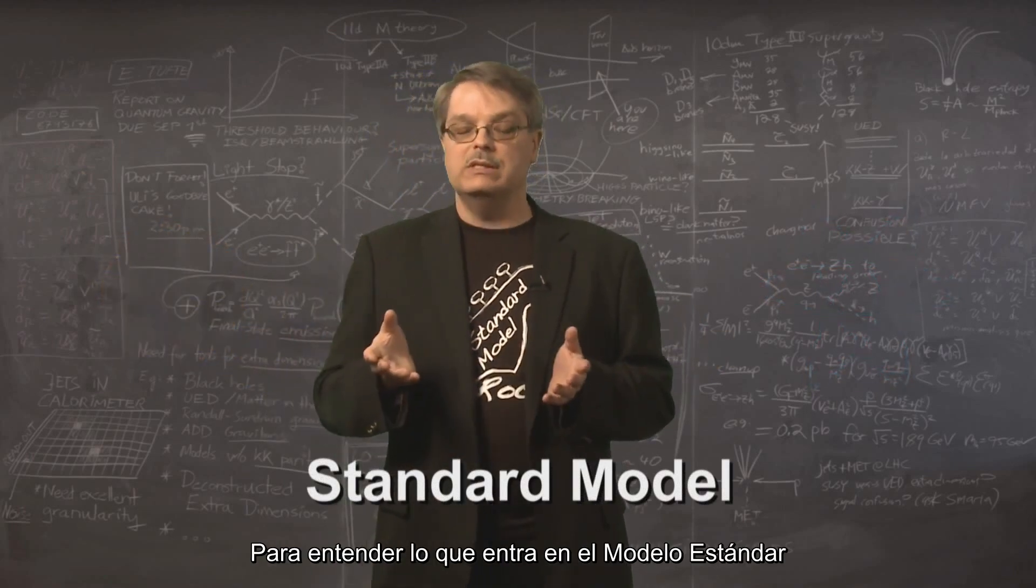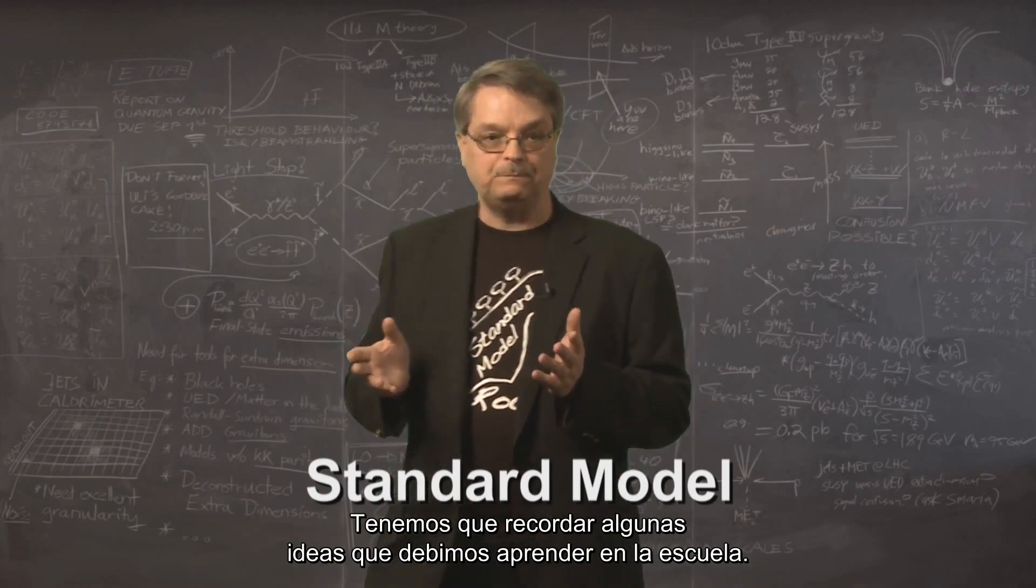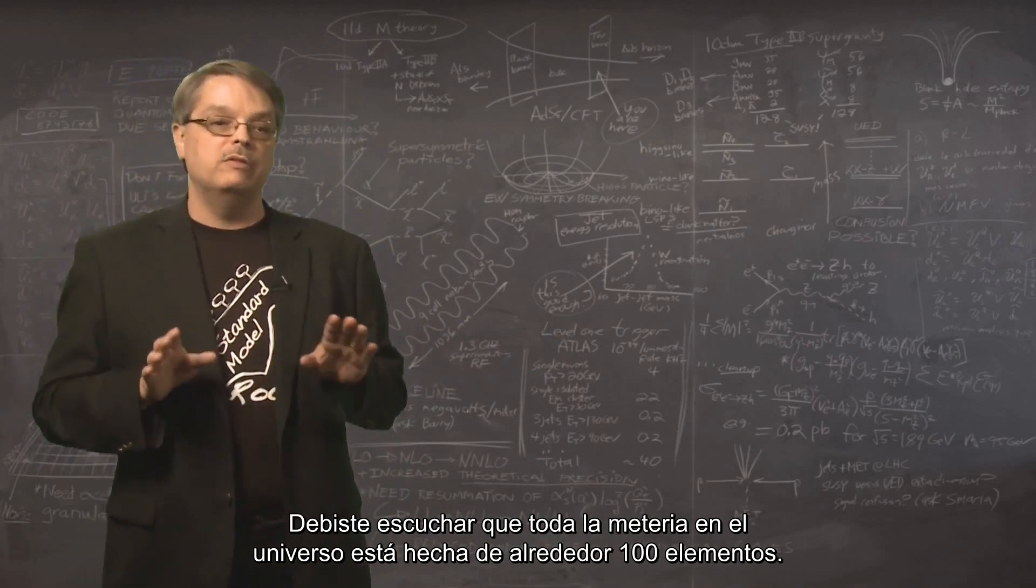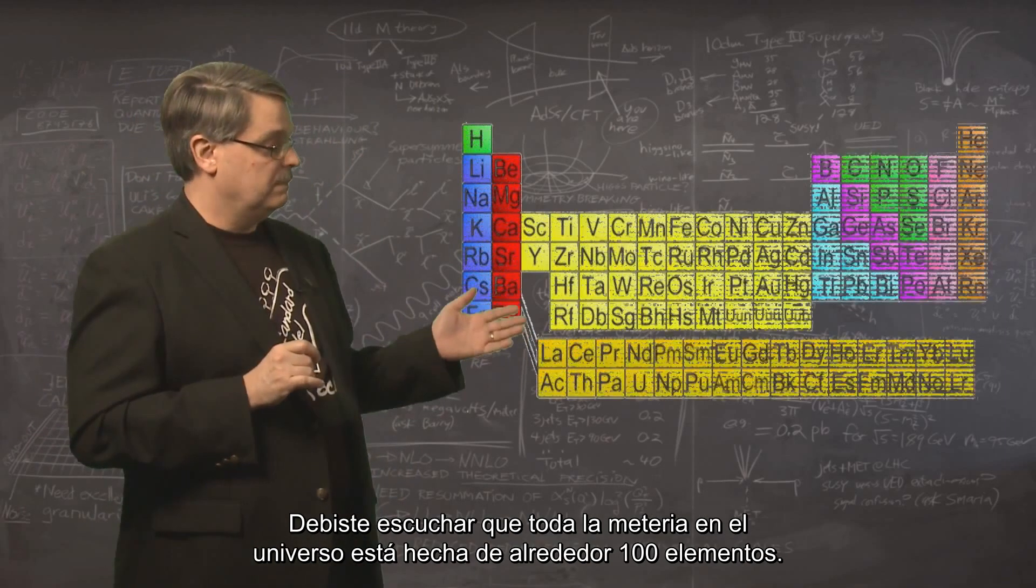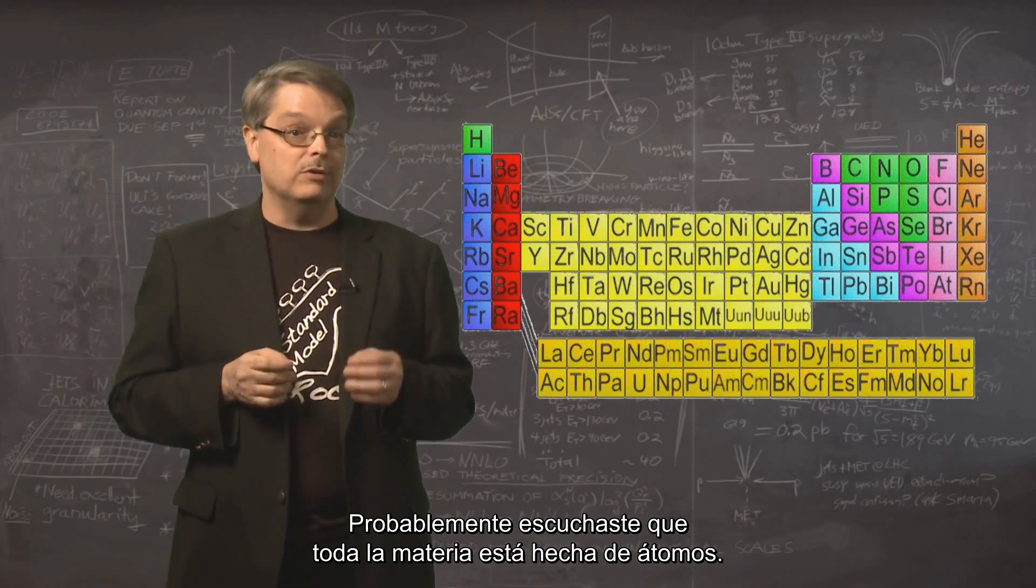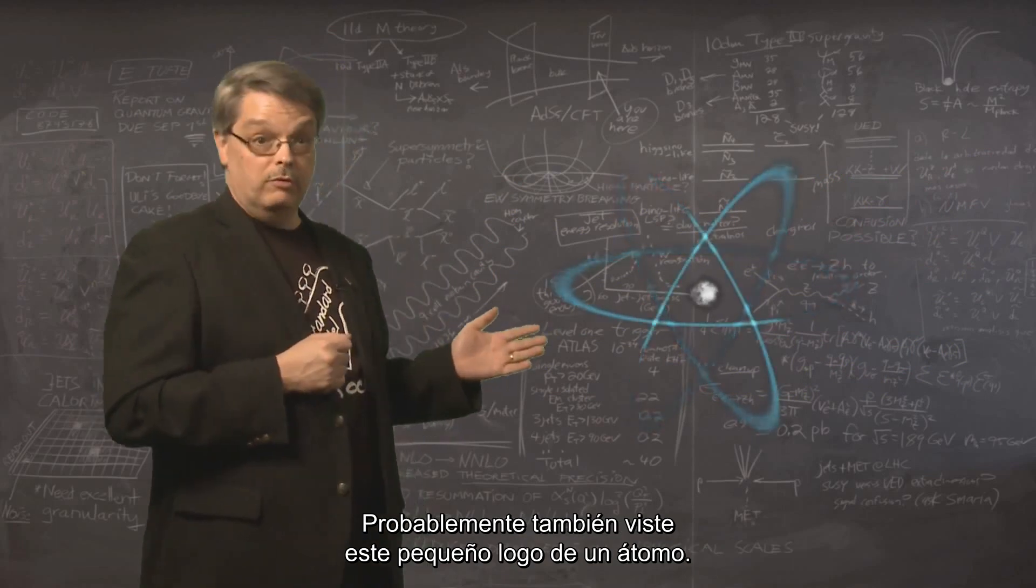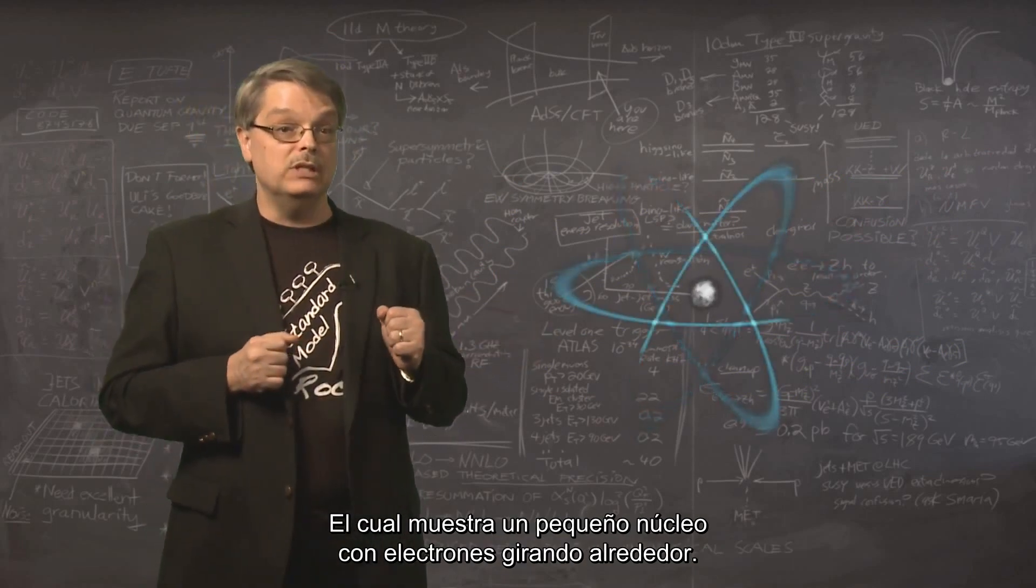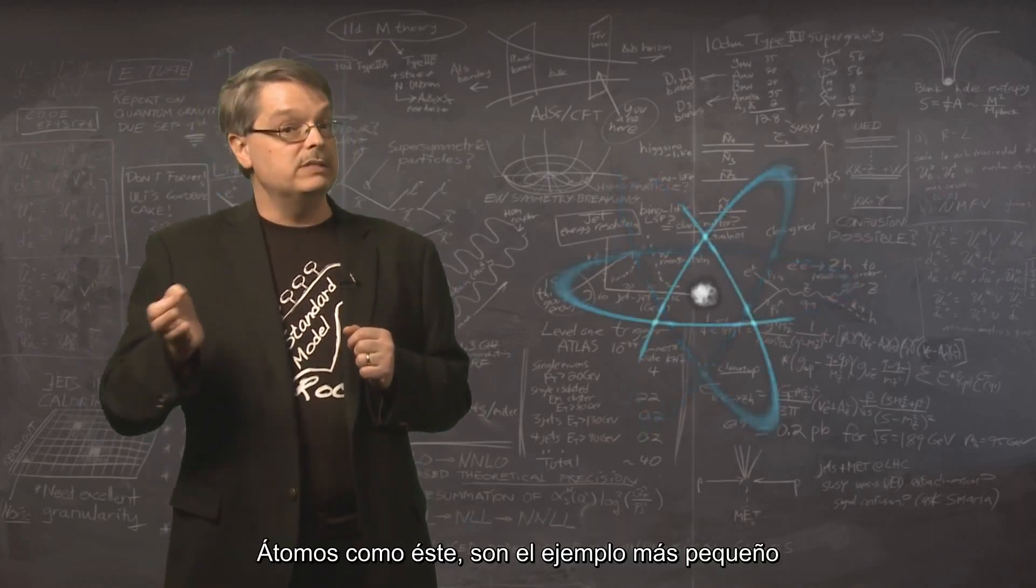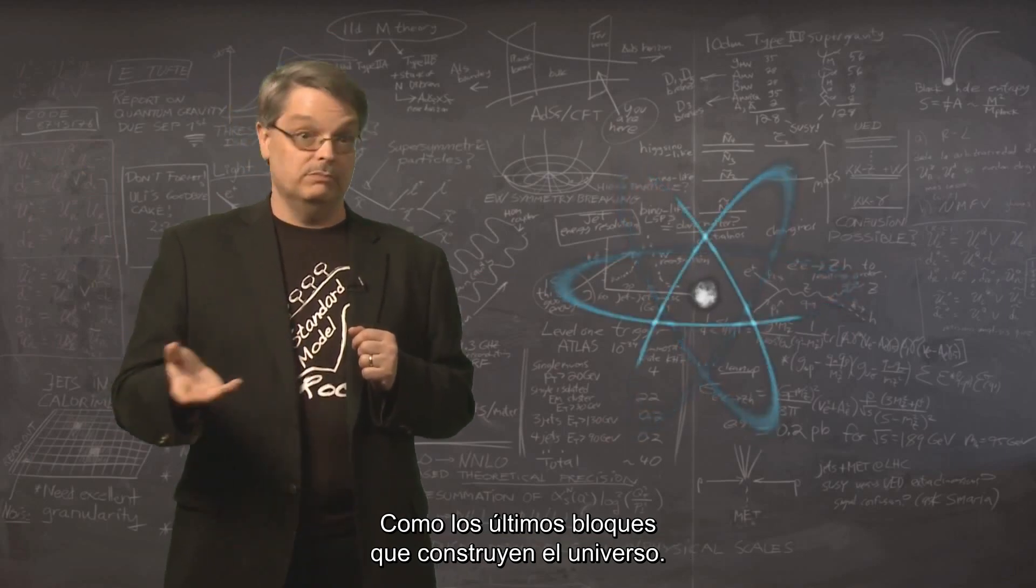To understand what goes into the Standard Model, we need to recall some ideas we might have learned from school. If you've ever taken a chemistry class, you've heard that all of the matter of the universe is made of about 100 elements. However, even if you've never studied chemistry, you've probably heard that all matter is made of atoms. You've even probably seen this little logo for an atom, which shows a tiny nucleus with electrons swirling around it. Atoms like these are the smallest examples of the various elements, and you could reasonably think of them as the universe's ultimate building blocks.